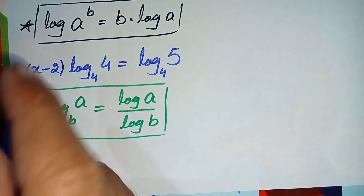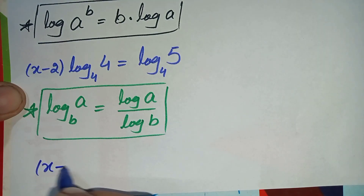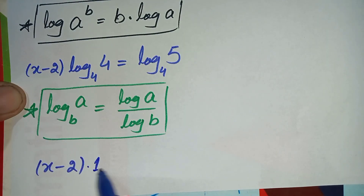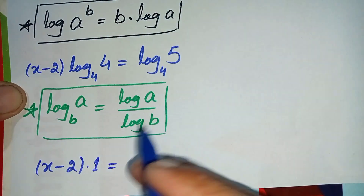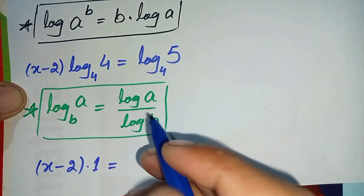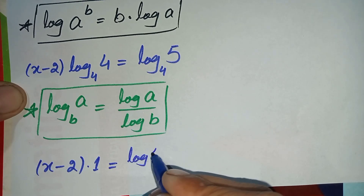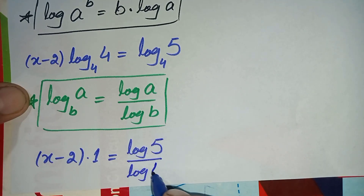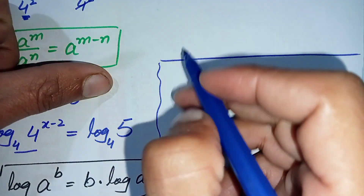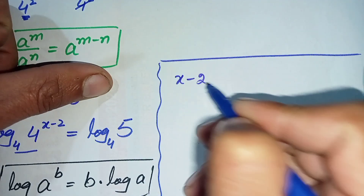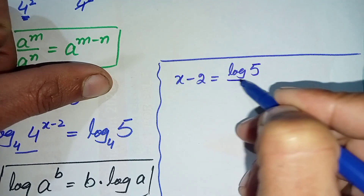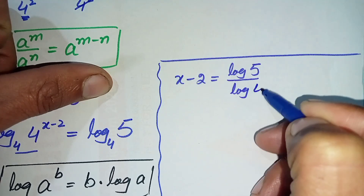Using this property, the equation becomes: x minus 2, multiplied by 1 (since log base 4 of 4 = 1), equals log 5 divided by log 4. So the equation simplifies to x minus 2 equals log 5 divided by log 4.